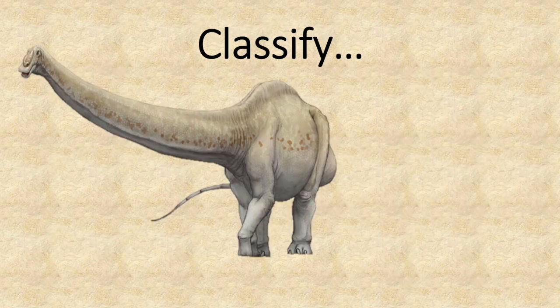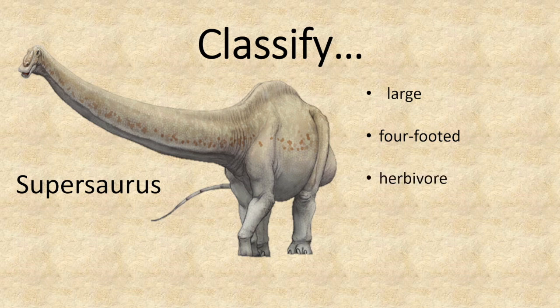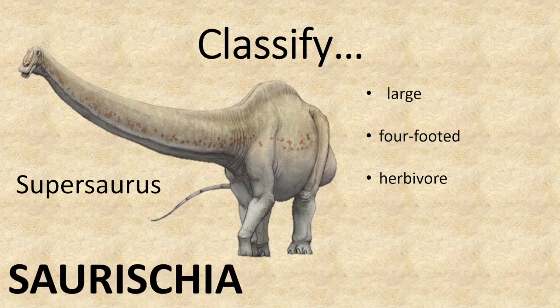Next up, we have a rather large dinosaur — that provides a clue as to which group it falls into. This is a Supasaurus. It's four-footed. Have a look at its jaw and teeth — it was a herbivore. So we know this is a Saurischia dinosaur, and because of its herbivorous diet, it falls into the sauropod subgroup.